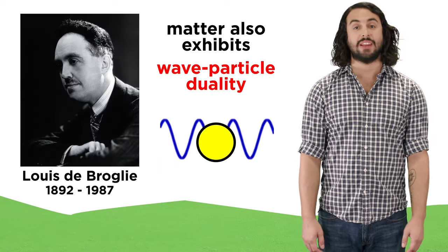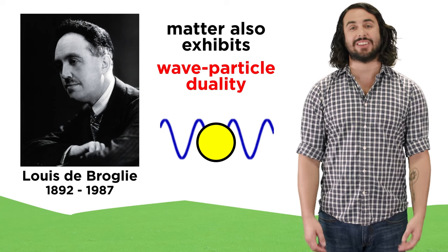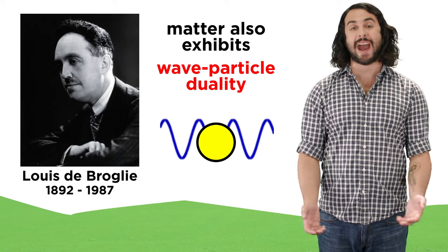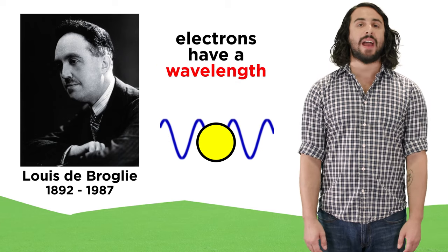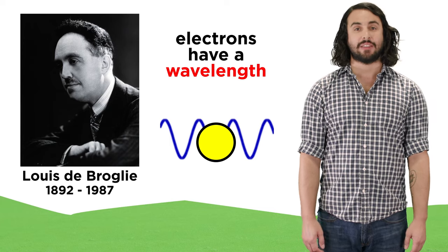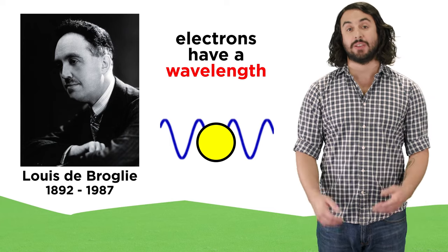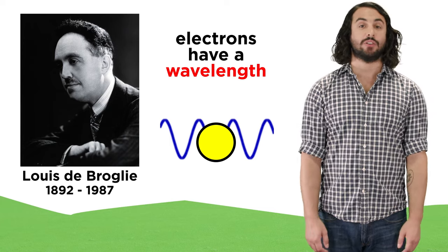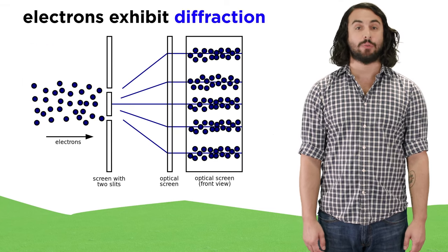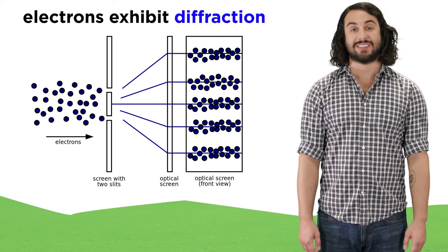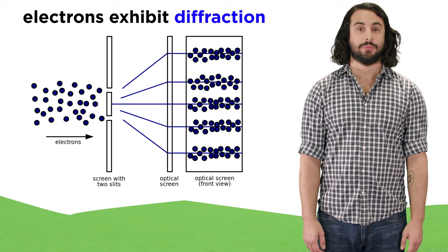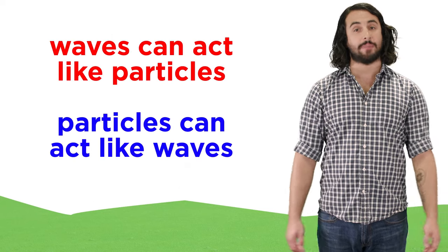After this, de Broglie demonstrated that it is not just light that exhibits wave-particle duality, but particles of matter as well. This meant that the electron, just like any other particle, has a wavelength that depends on its momentum, which complicated matters for chemistry quite a bit. This notion was soon corroborated when a beam of electrons was shown to exhibit a diffraction pattern, just like a beam of light does. This meant there was no turning back.